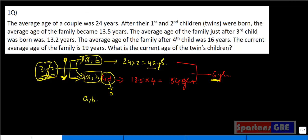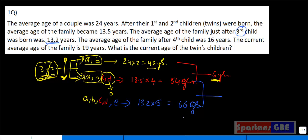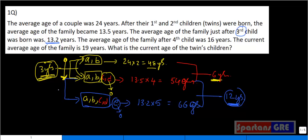Continuing the story with A, B, C, D — one more person is born, the third child E. When E is born, the average age was 13.2 years. That means 13.2 into 5 people gives total age of 66 years. The age gap here is 12 years — E's age is 0 at this point, but the 4 existing people aged by 12 years. So the time gap is 12 divided by 4, which is 3 years. That means E was born 3 years after the twins.